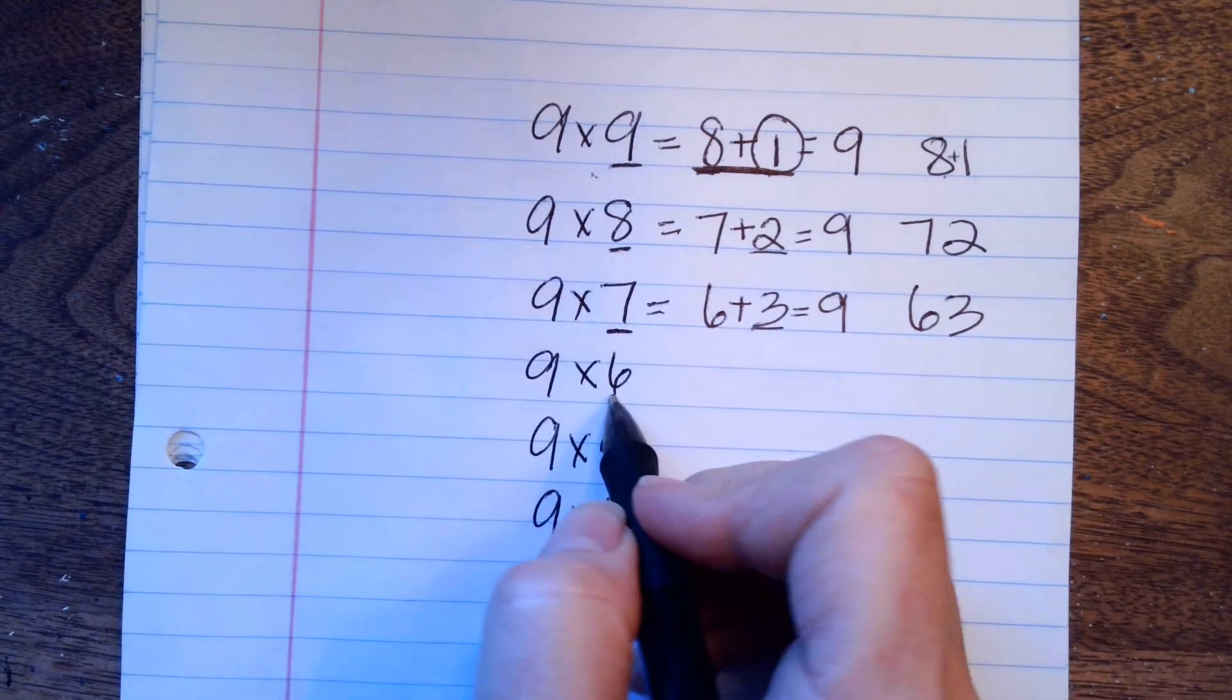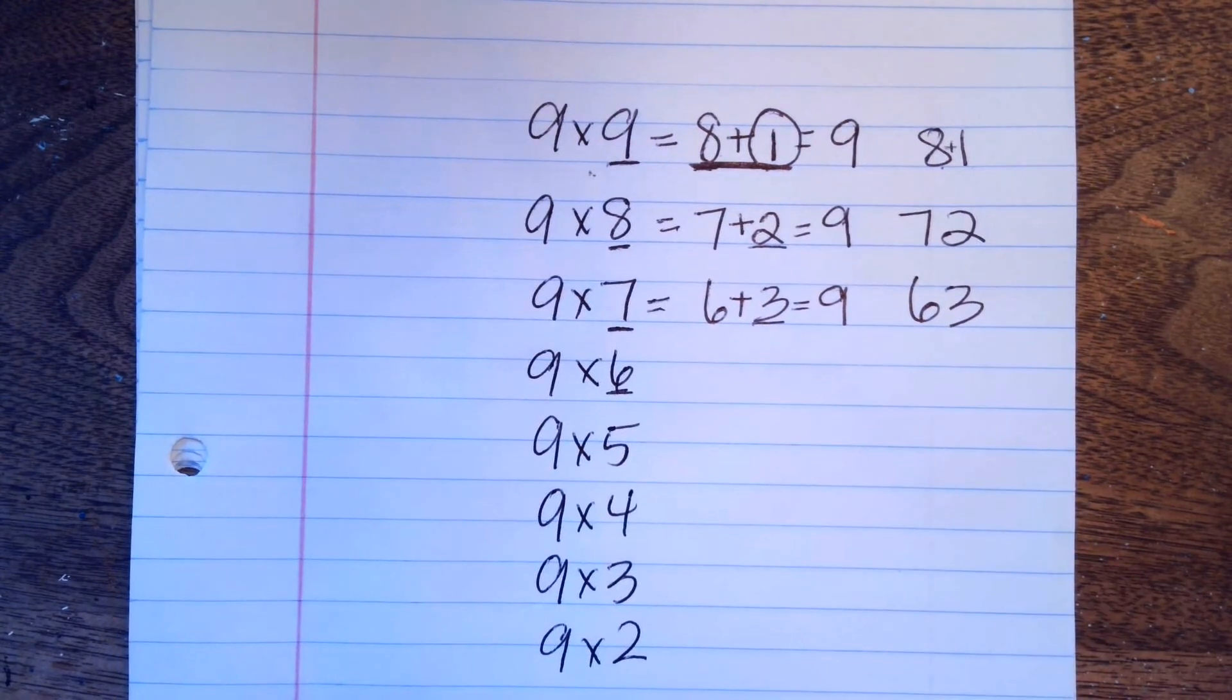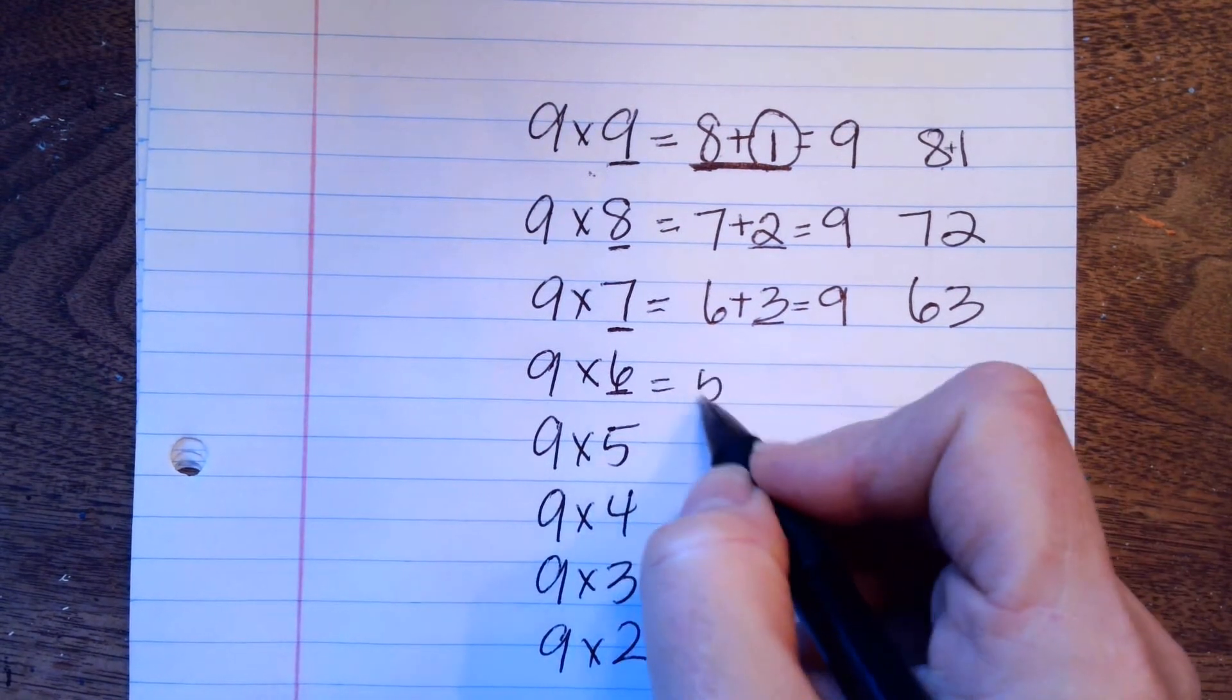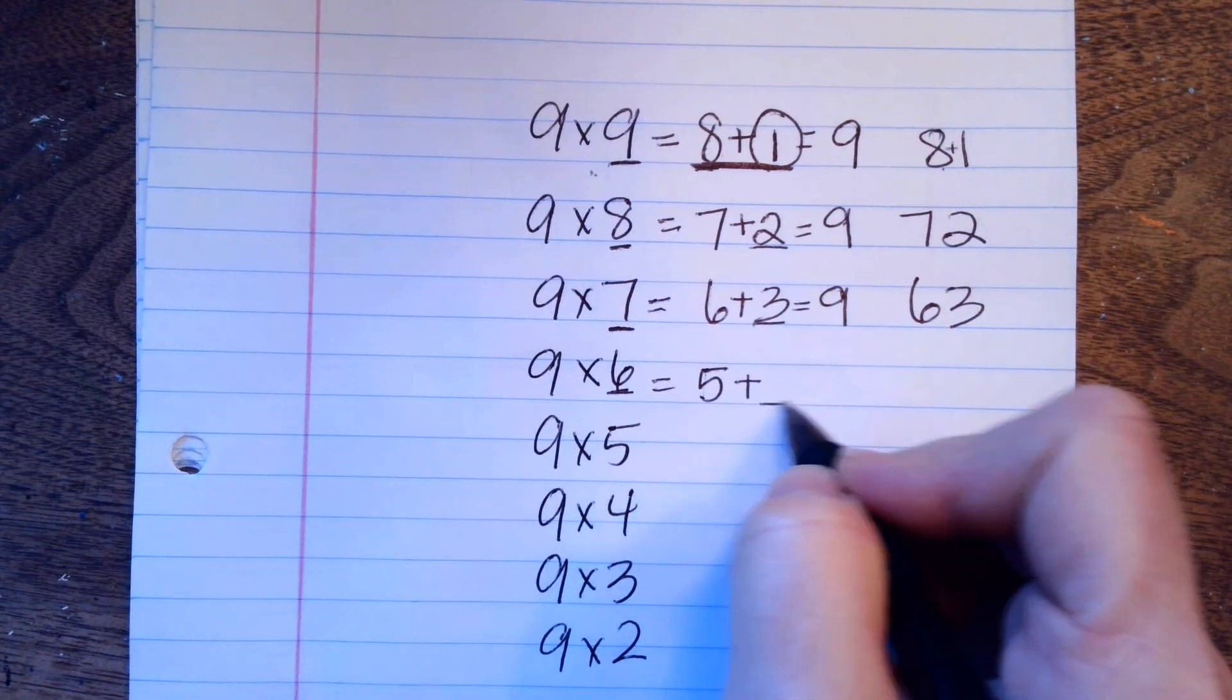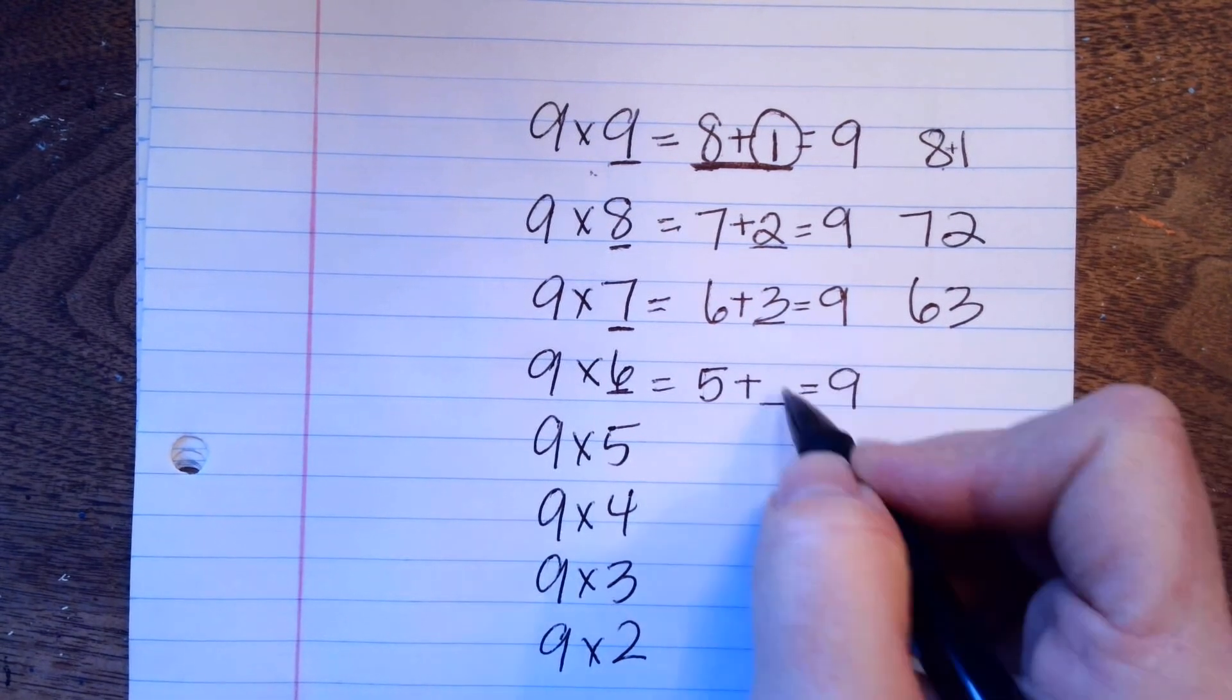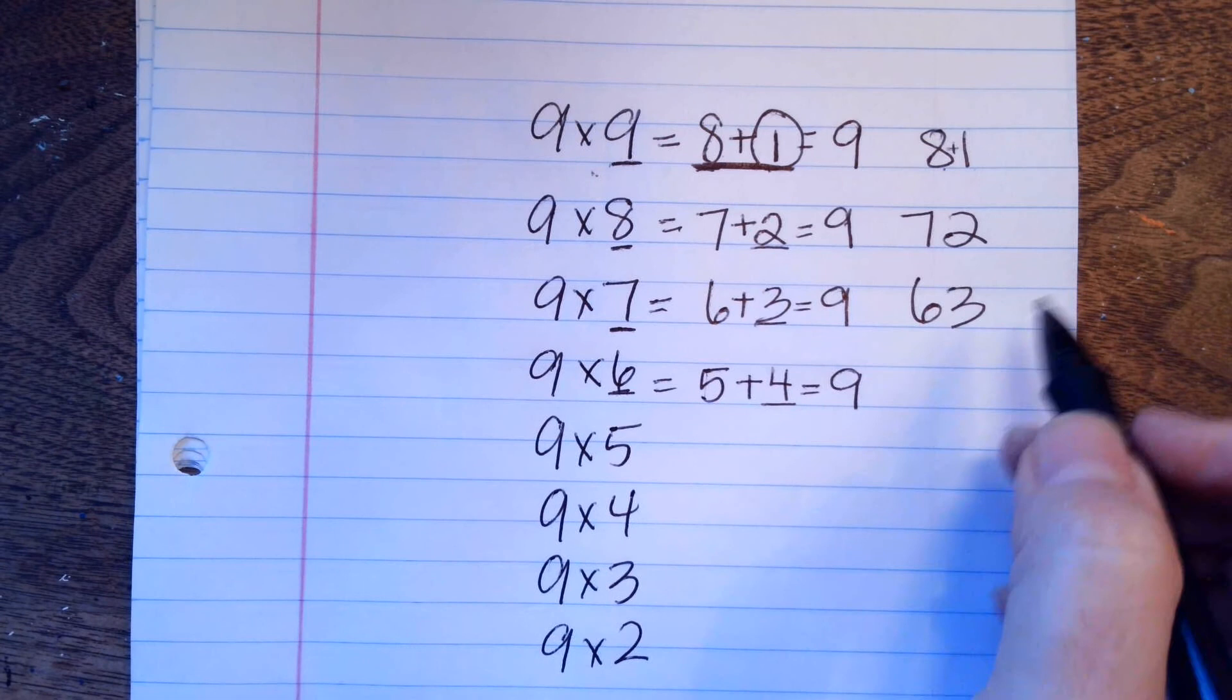Next one, we're going to underline the 6. 6 minus 1 is 5. 5 plus something equals 9. 5 plus 4, 54.